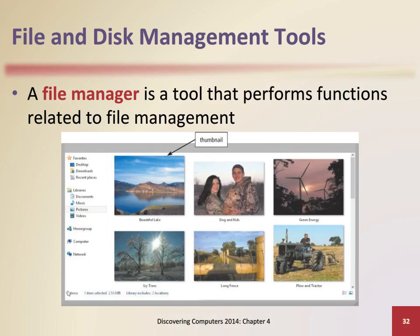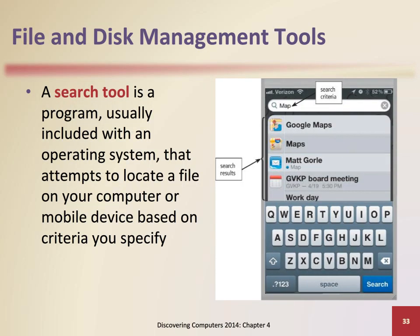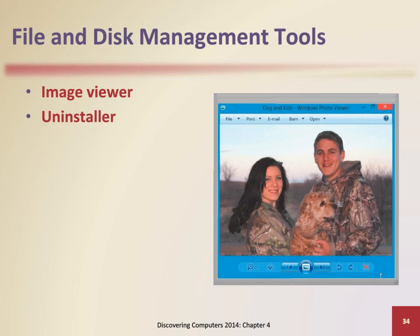A file manager utility performs functions related to file management, such as listing, deleting, copying, renaming, and organizing files. A search tool attempts to locate a file on your computer based on criteria you specify, and can look through documents, photos, music, and other files. An image viewer allows users to display, copy, and print the contents of a graphics file such as a photo. An uninstaller is a tool that removes a program as well as any associated entries in the system files.